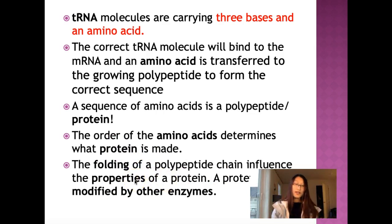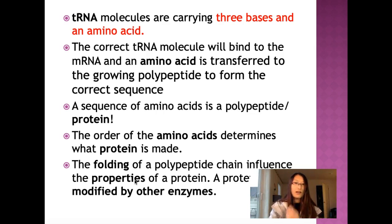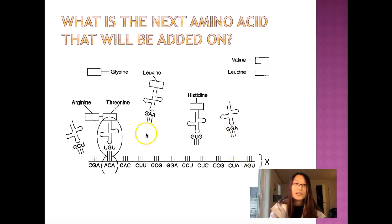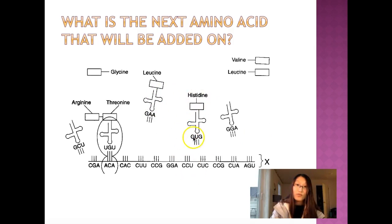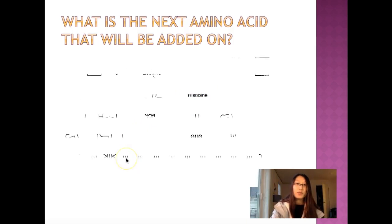The order of the amino acids determines what protein is made, and the amino acid sequence is determined by the mRNA sequence, and the mRNA sequence is determined by the DNA sequence. The folding of the polypeptide chain influences the properties of a protein. If the protein misfolds — just like doing an origami and misfolding the pig — the protein is not going to be correct, so it cannot function. We have our mRNA here, trying to figure out what the next amino acid is. If you read the codon CAC, the anti-codon has to be GUG, and the tRNA with GUG carries histidine — so the next amino acid connected should be histidine.